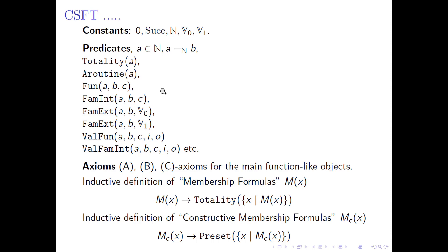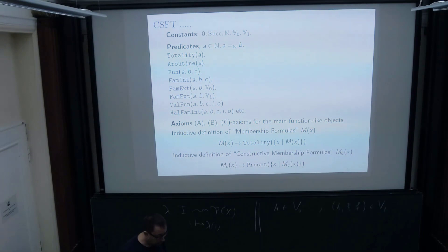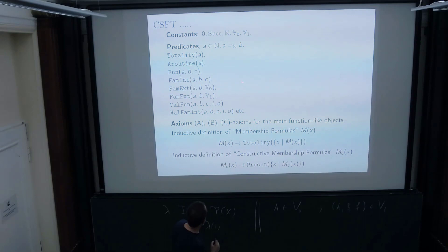If you take this informal theory of sets and functions of Bishop as a guide — that you need these objects — then you can start transforming the CST system a bit: adding a few more constants and predicates, more function objects, more valuation predicates depending on the function objects, axioms of the kind of group A and group B for natural numbers, and the appropriate C-axioms for all these function-like objects. Then you have to define inductively the membership formulas and the good membership formulas to determine the defined sets. These are very starting ideas that require a lot of work, but the informal theory of sets and functions is a good guideline to find the right set-theoretical formulation of Bishop's constructive theory of sets and functions. Thank you.